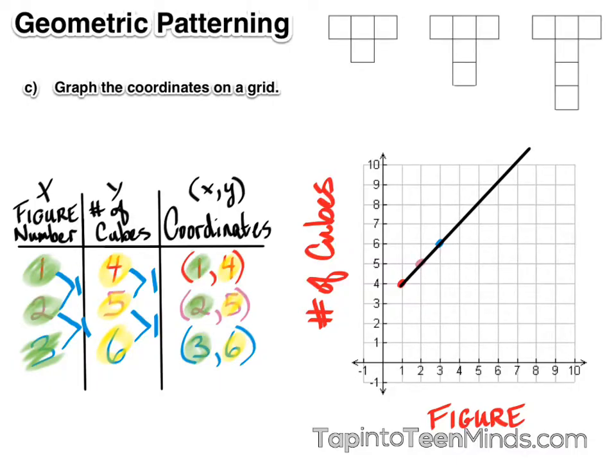And this pattern is actually starting to form a line for us. So since it's a straight line, we can see that there is a pattern, and we would call this pattern linear.